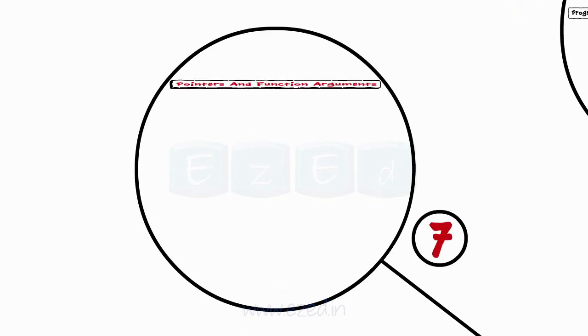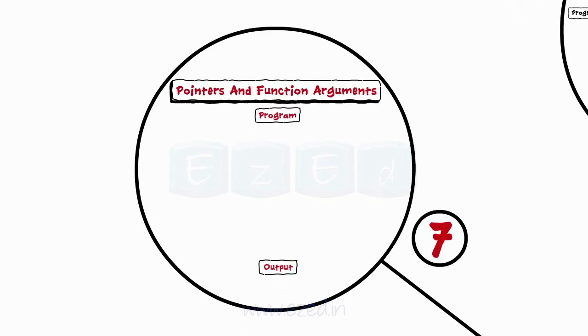Lastly, we saw how pointers can be used as function arguments. Such type of function calling is called as call by address.